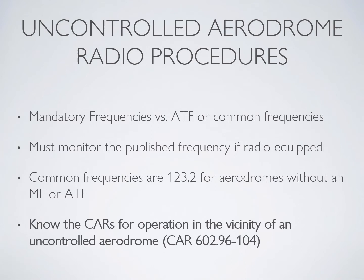All uncontrolled aerodromes are going to have a frequency assigned to them, which you can look up in the CFS. It's important to note whether the frequency is a mandatory frequency or whether it's an ATF or a common frequency. If you have a radio, you should be monitoring the published frequency, and you must monitor if it's a mandatory frequency. Common frequencies are going to be 123.2 for an aerodrome without an MF or an ATF. You must know the reporting requirements for operation in the vicinity of an uncontrolled aerodrome — look them up and read them, as they will probably be on your written exam. It's CAR 602.96 to 104.